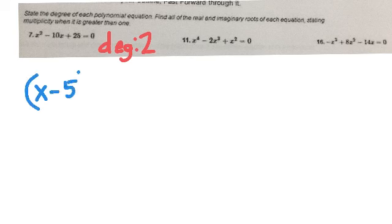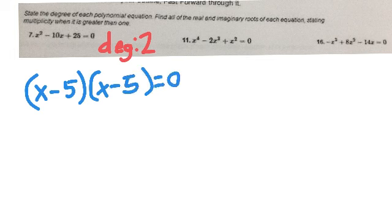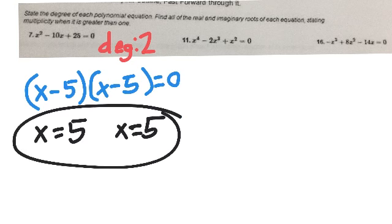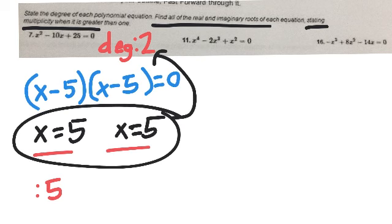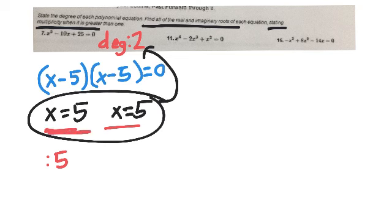So multiplies to be 25, adds or subtracts to be negative 10 — that would be negative 5 and negative 5. So I find that x equals 5 and x equals 5. These are the two x-intercepts because it is a degree 2 polynomial. Now the next thing is to state the multiplicity when it is greater than 1. The multiplicity just tells me how many times each root occurs.